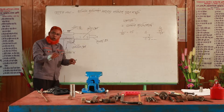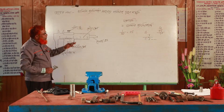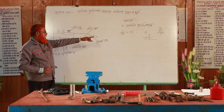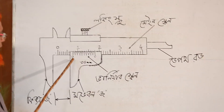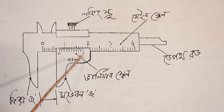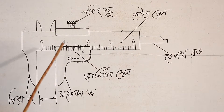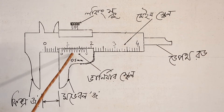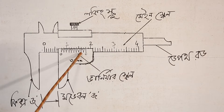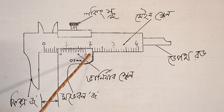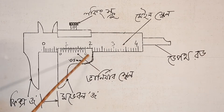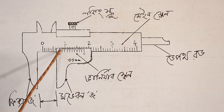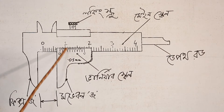We will see that this is one of our most important tasks. We will see that this is 0 to 0. These divisions are 1-2-3-4-5-6-7-8-9-10. This is the number of divisions in our scale.